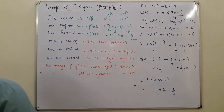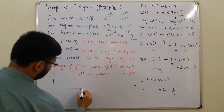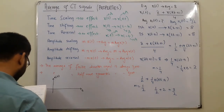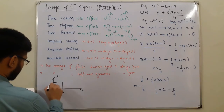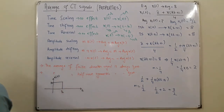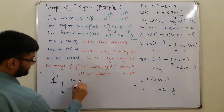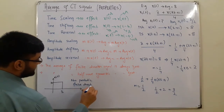Let me do one more example. x(t) is given graphically — it has a value of A₀ from 0 to 1/2, and is zero elsewhere. This is a non-periodic signal, and it is also a finite-duration signal. From the finite-duration property, we can directly say the average is 0.